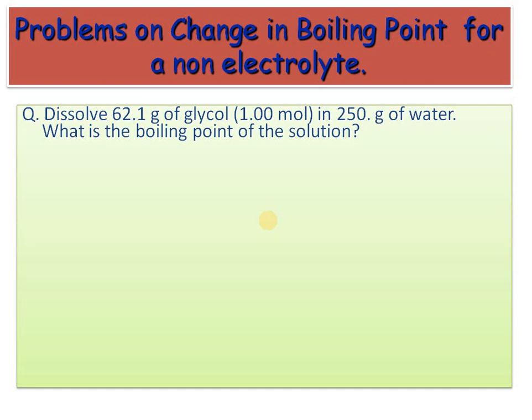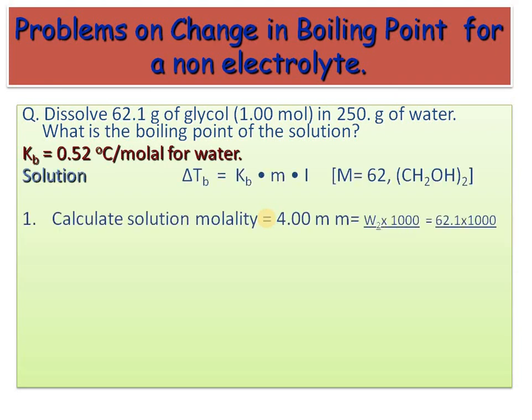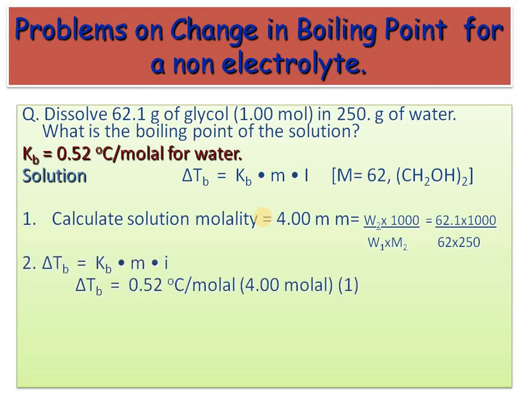We need to calculate molality using the formula: m = (W₂ / M₂·W₁) × 1000. After substituting, molality comes out to be 4. Then ΔTb = Kb × m × i. The boiling point increases. Earlier the boiling point of water was 100°C, and now it is elevated. After addition of a non-volatile solute, the boiling point increases — this is known as elevation of boiling point.